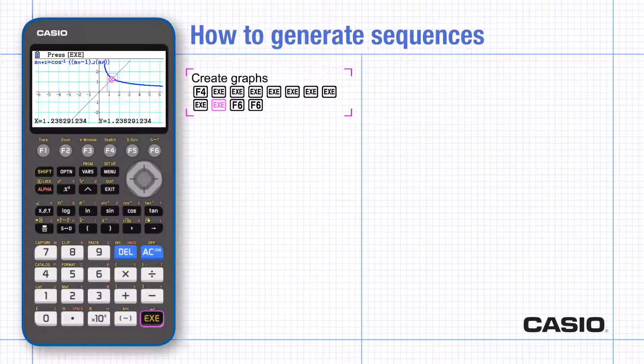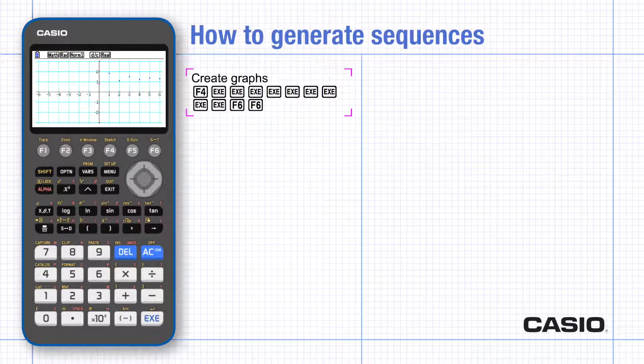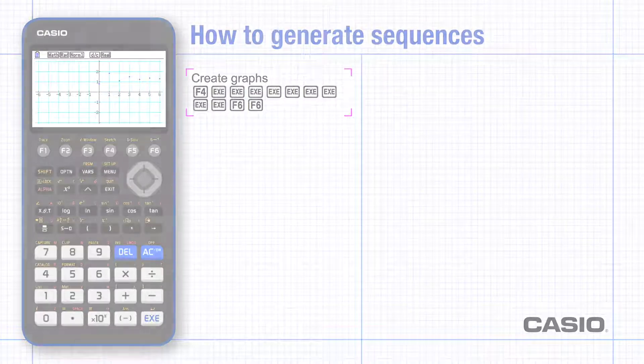Use F6 or exit to return to the list of values, and now graph plot will give a different graph showing An against n.